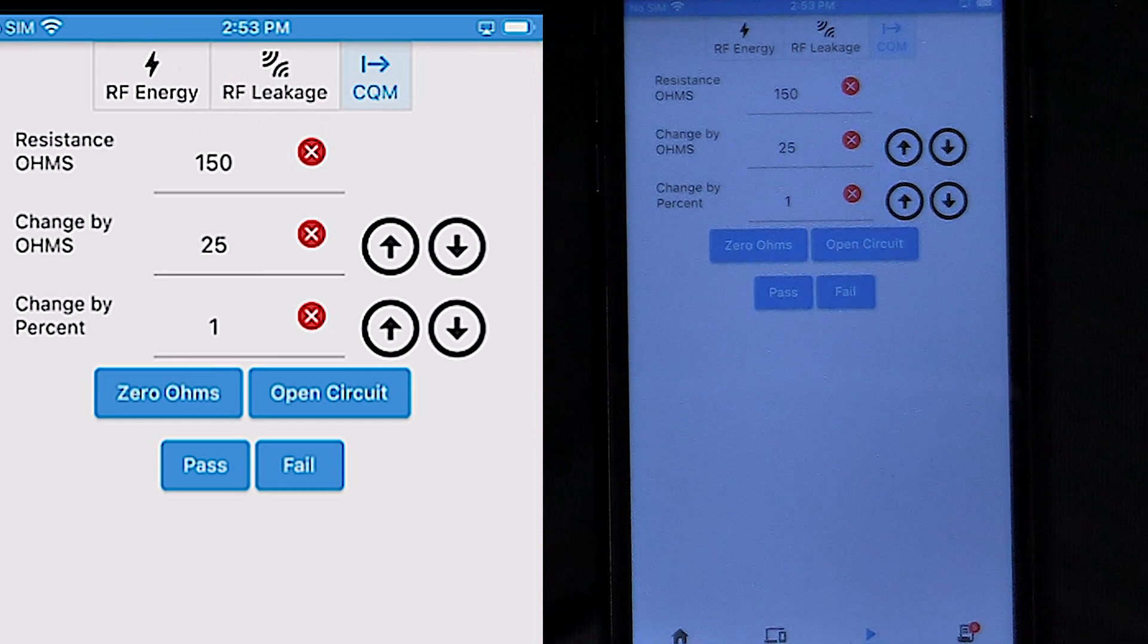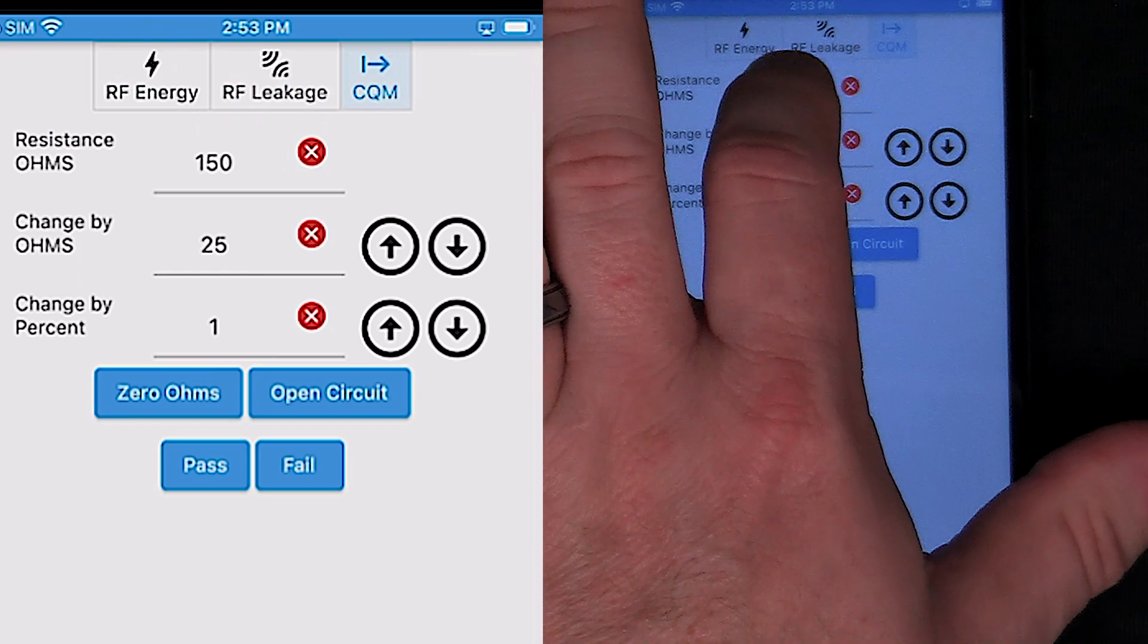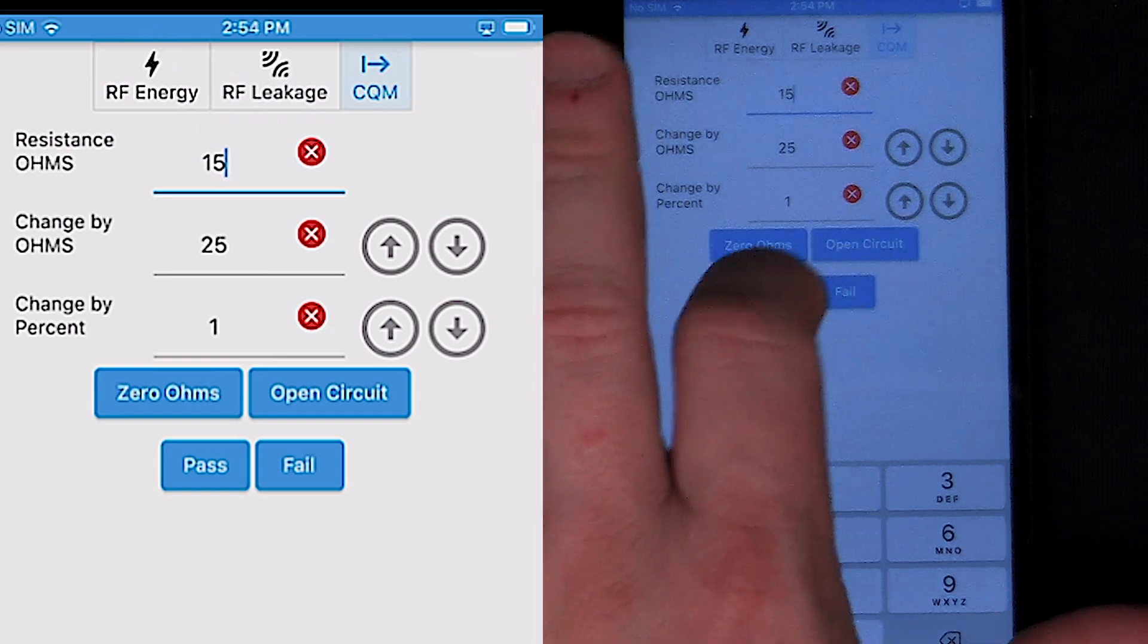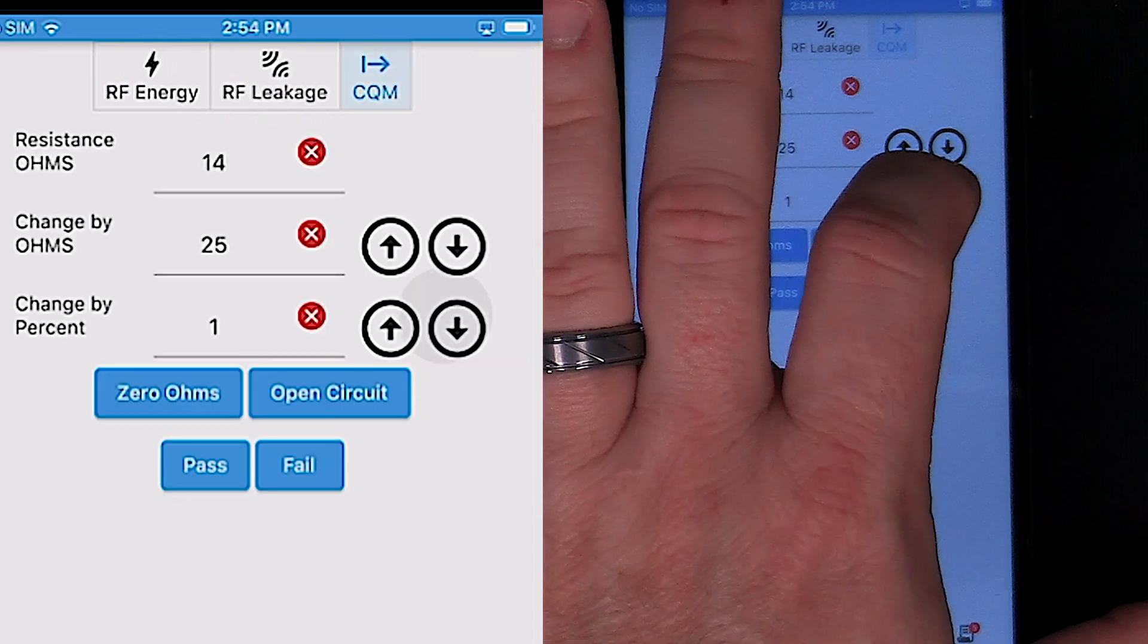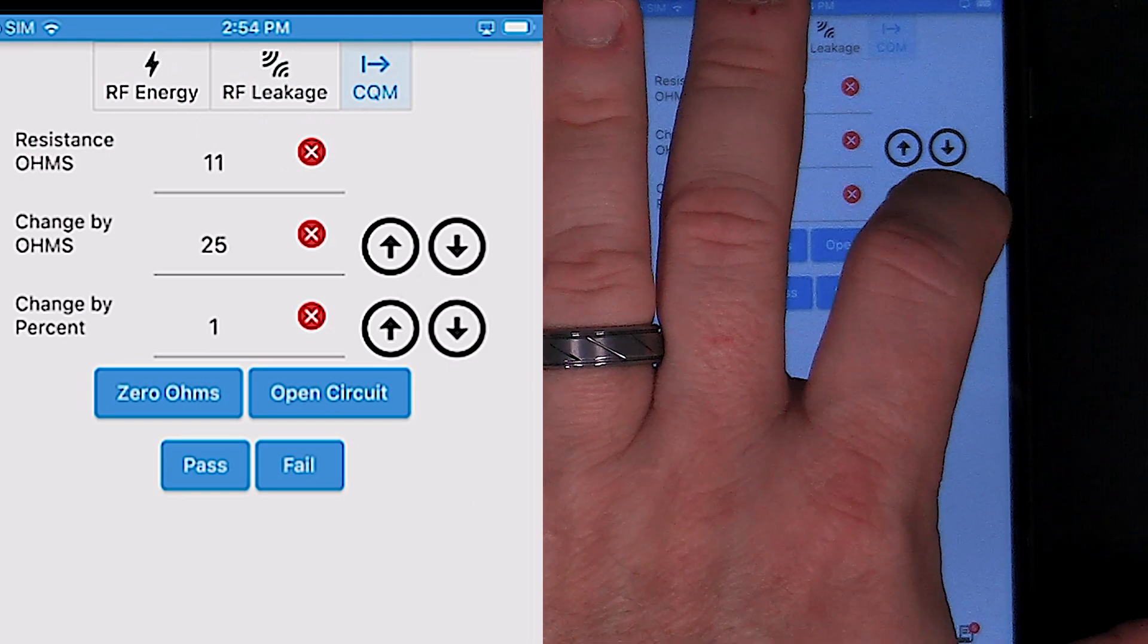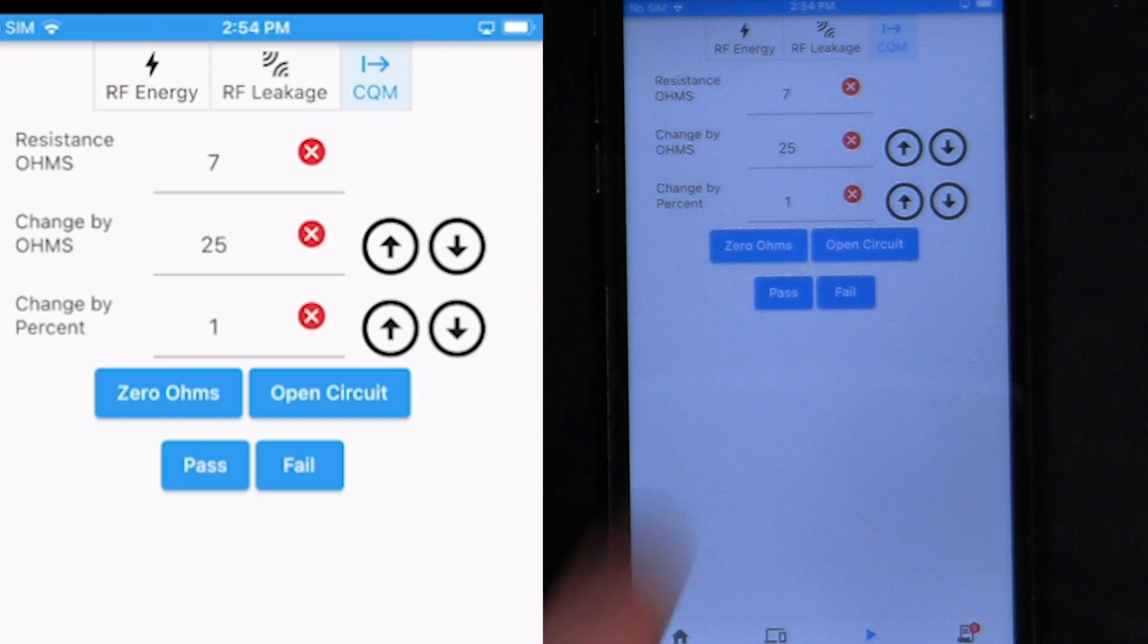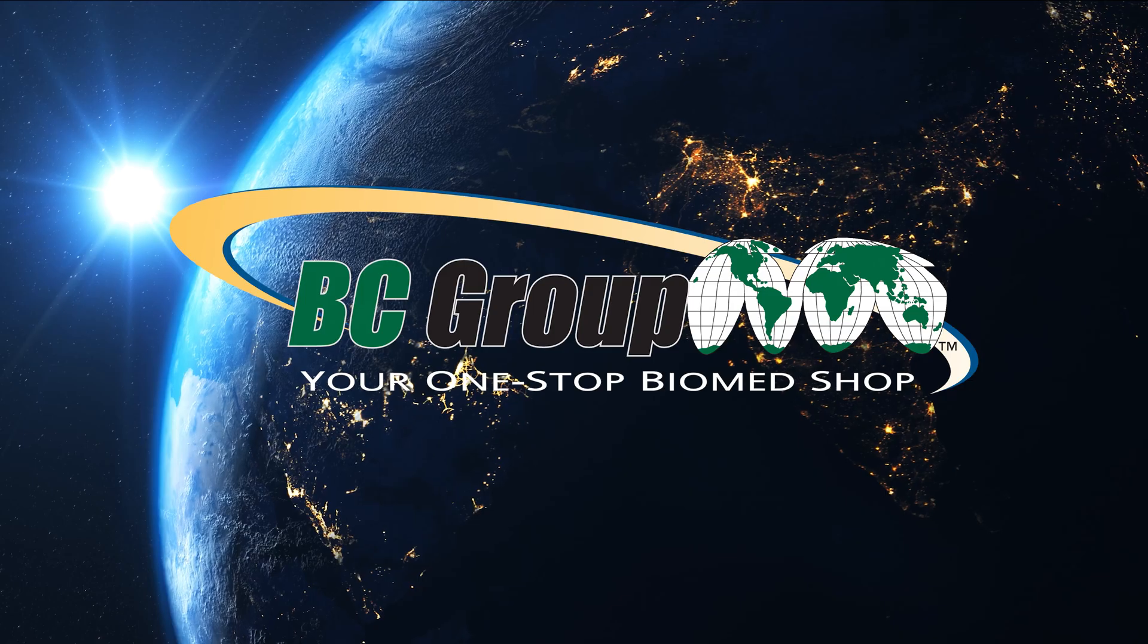And then the same thing for this split electrode, we can set this to, say, 15 ohms. And we can decrease the resistance. And we would look for the point where the generator goes to an alarm condition. And here it happened at 7 ohms. So we can say that's a pass. We can follow the service manual procedure for checking out the REM function.